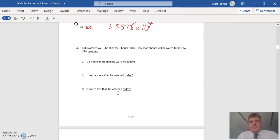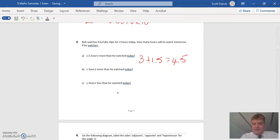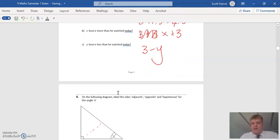Bob is watching some YouTube clips, three hours today. How much is he going to watch tomorrow if he watches 1.5 hours more than he watched today? So it's 3 plus 1.5 equals 4.5 hours. X hours, in this case it's going to be X plus 3 hours. Y hours less, so we watched 3 today minus Y.